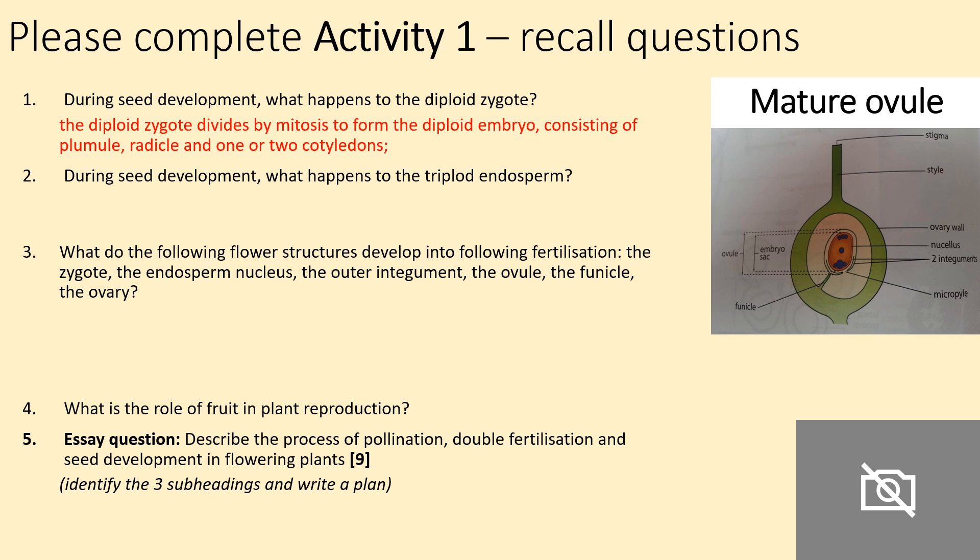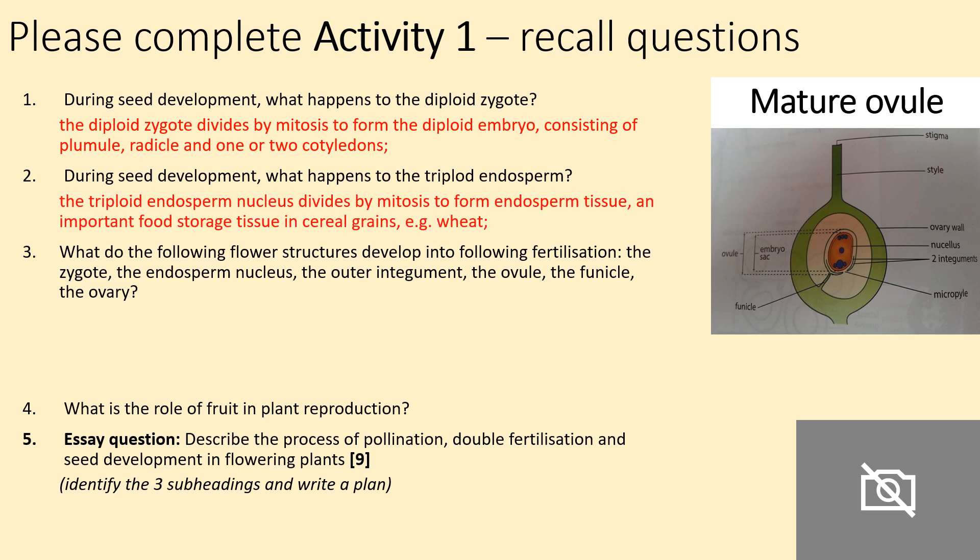During seed development, what happens to the triploid endosperm? The triploid endosperm divides by mitosis to form the endosperm tissue, which is an important food storage tissue in cereal grains, for example wheat.